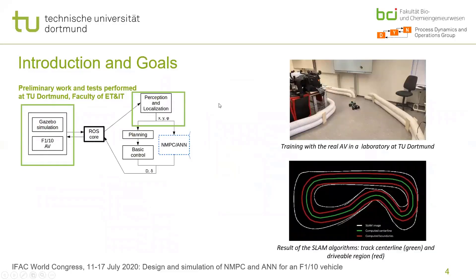We have a solid base to start from. Our colleagues at the faculty of ETA in Dortmund have done a lot of work with real autonomous vehicles, and they have provided us SLAM algorithms which can deliver information about the track — meaning the boundaries of the track and the trajectory, as you can see in green in the middle of the track.